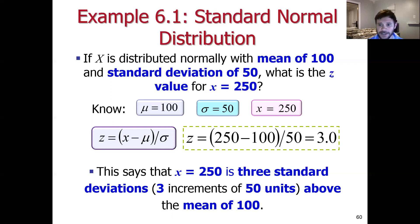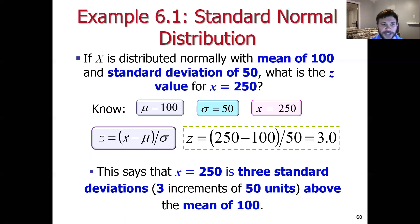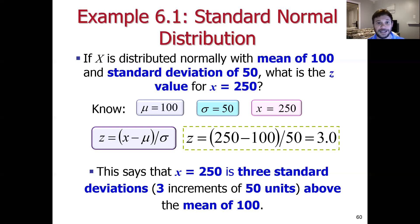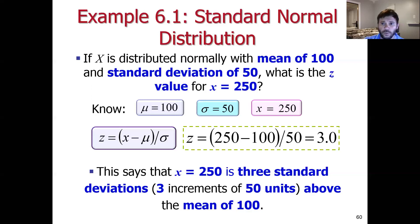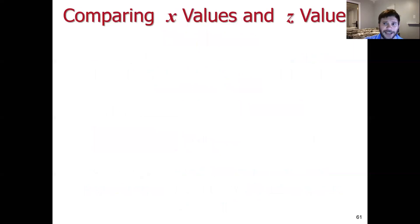We can start a problem in X space and use the Z-transform to move into Z space. Certain transforms make problems easier, and it's a lot easier to work in Z space than in X space. There's one table that corresponds to Z space — the standard normal distribution. But in X space, we would need possibly an infinite number of tables for any combination of mu and sigma.